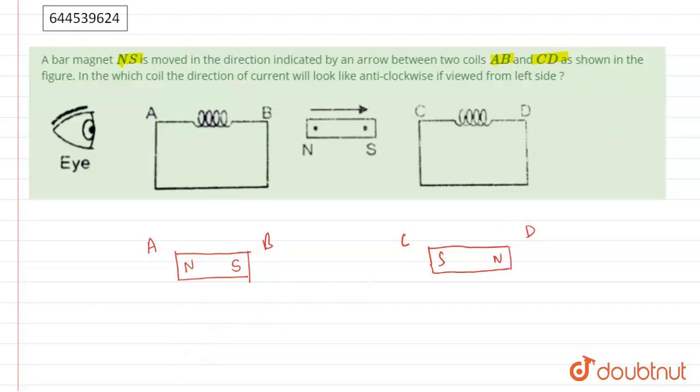North means anti-clockwise, and south means clockwise. A is working as a north, which means in AB coil there is an anti-clockwise current when we view from the left side. So the correct answer is AB coil.